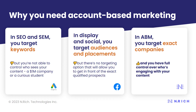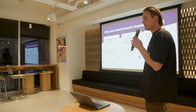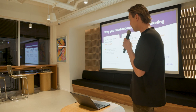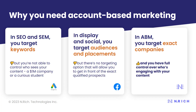The main reason ABM reduces your CAC is that SEO and SEM target keywords, meaning you're targeting a very wide audience — leading to budget spillage. Similarly, display and social target broad audiences, so you end up spending budget reaching students, bots, or irrelevant people. With ABM, you target exact companies, focusing budget and efforts from both sales and marketing toward the specific accounts you want.